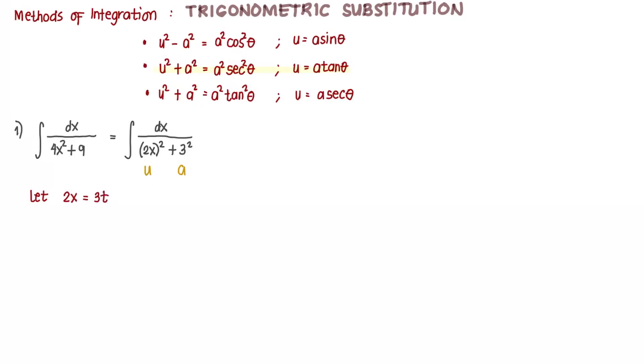And then we find the differential: 2 dx equals 3 secant squared theta d theta. So dx equals 3 halves secant squared theta d theta.